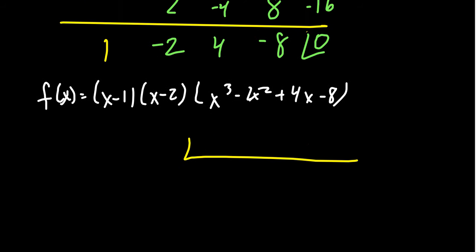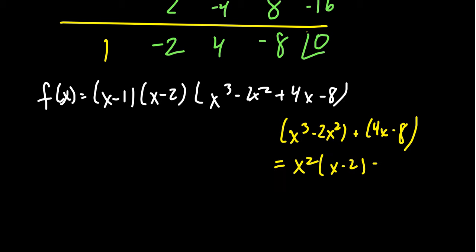Synthetic division worked out great here. But when I look at this cubic polynomial, this makes me think I have 4 terms. I think I could factor this by groups. If you do factor by groups, you take x cubed minus 2x squared, and then you'd have a 4x minus 8. If you factor out an x squared from the first group, that leaves x minus 2 behind. Factor out a 4 from the second group, that leaves x minus 2 behind. And so then you see that it's factored as x squared plus 4 and x minus 2. Which is the exact same thing synthetic division gave you.